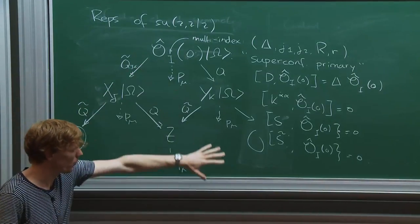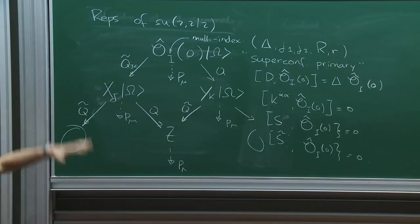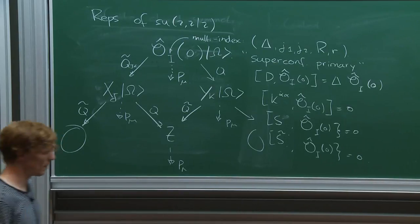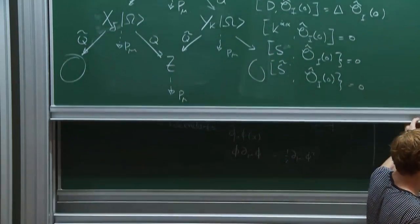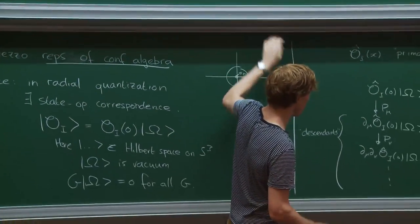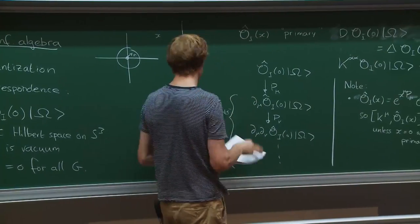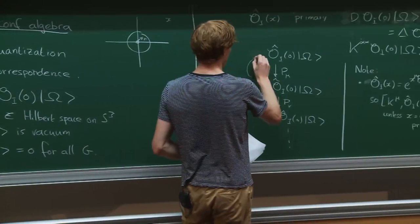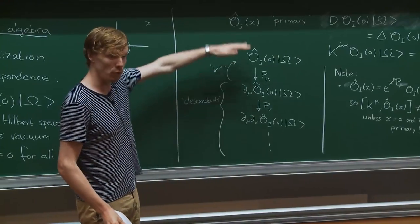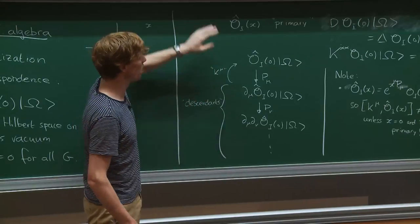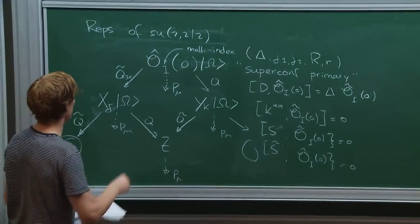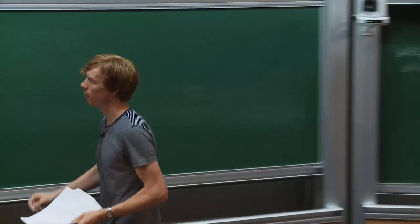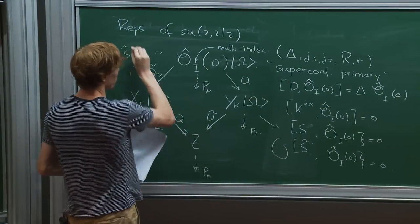The superconformal primary is in particular a conformal primary. Inserted at the origin, it is an eigenfunction of dilatations, killed by all special conformal generators as before, and also killed by all the S and S-tilde supercharges. I can generate descendants by acting with P_mu, but also by acting with the supercharges Q and Q-tilde. These give new operators which are conformal primaries, though not superconformal primaries. Continuing to act with Q's and Q-tildes generates further conformal primaries, each with a full tower of conformal descendants.